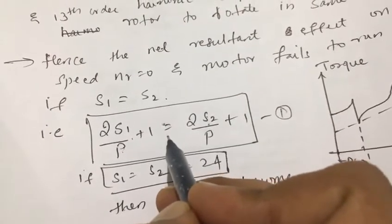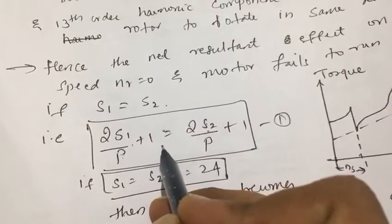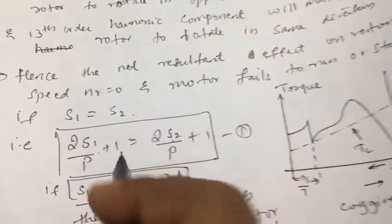If the effect is zero, then torque will be zero. If torque is zero, then there will be no force, and the machine will automatically come to resting condition, that is nr equals zero.